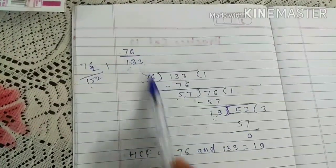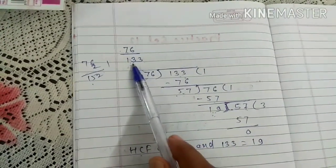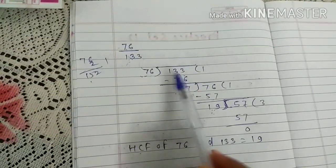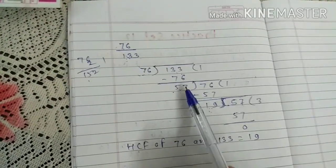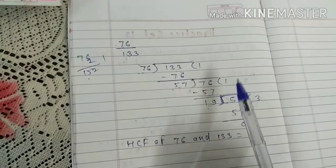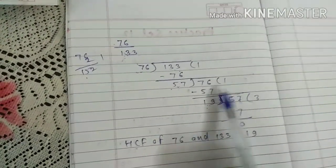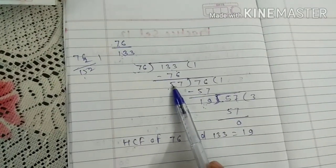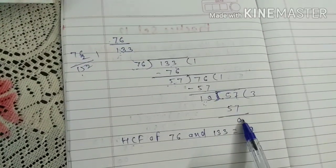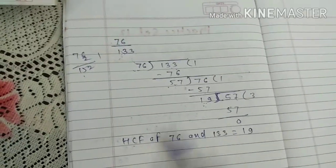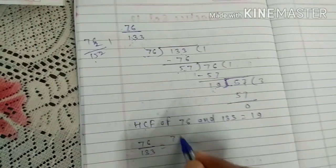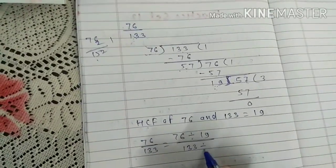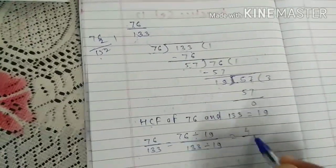76 upon 133. Smallest number is 76, greatest is 133. Divide 76 by 19, answer is 4. Divide 133 by 19, answer is 7. So 4 upon 7 is the simplest form.